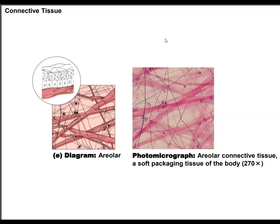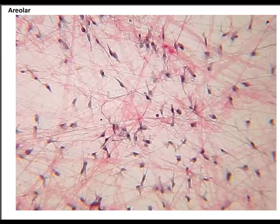The last video was on epithelial tissues and this video is going to be over connective tissues. The first specific tissue is areolar. Areolar looks like spider webs with a bunch of bugs caught in it — the dark purple lines and pink lines are the spider webs, and the little dark dots are the bugs. The big tissue category is connective and the specific tissue is areolar.